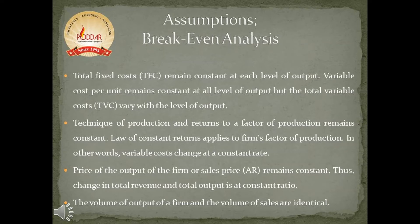Variable costs change at a constant rate. The third assumption is that the price of output of the firm, or sales price, remains constant — thus the change in total revenue and total output is at a constant ratio. The fourth assumption is that the volume of output of a firm and the volume of sales are identical.